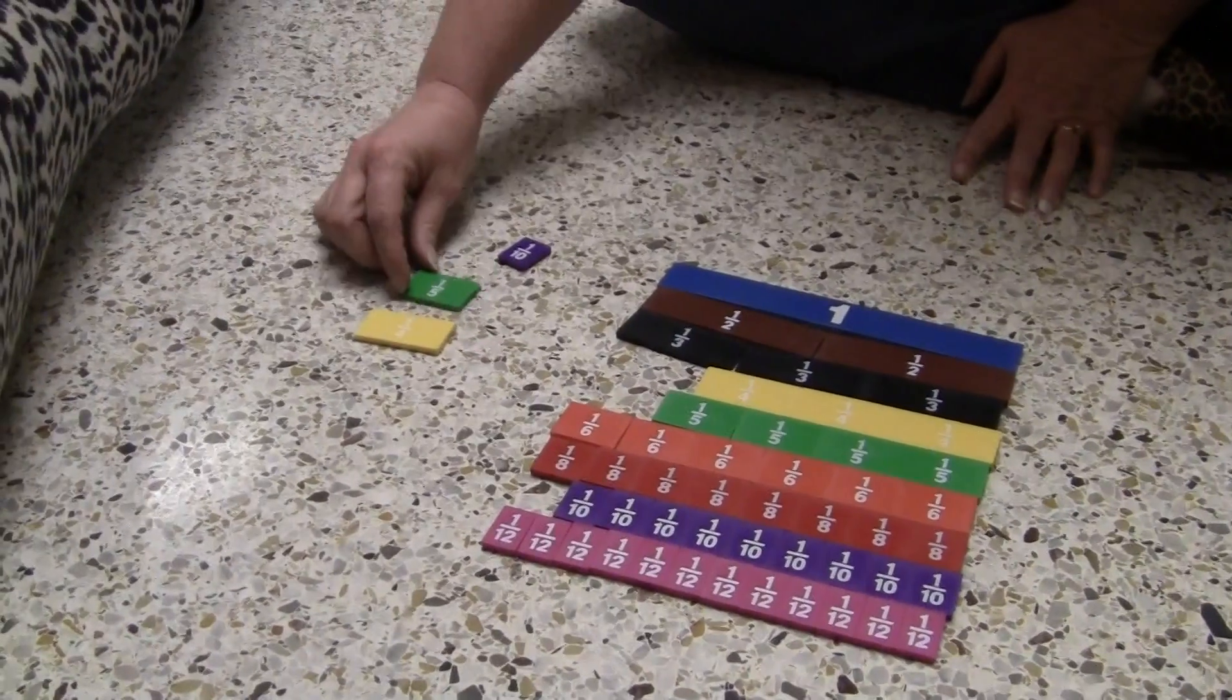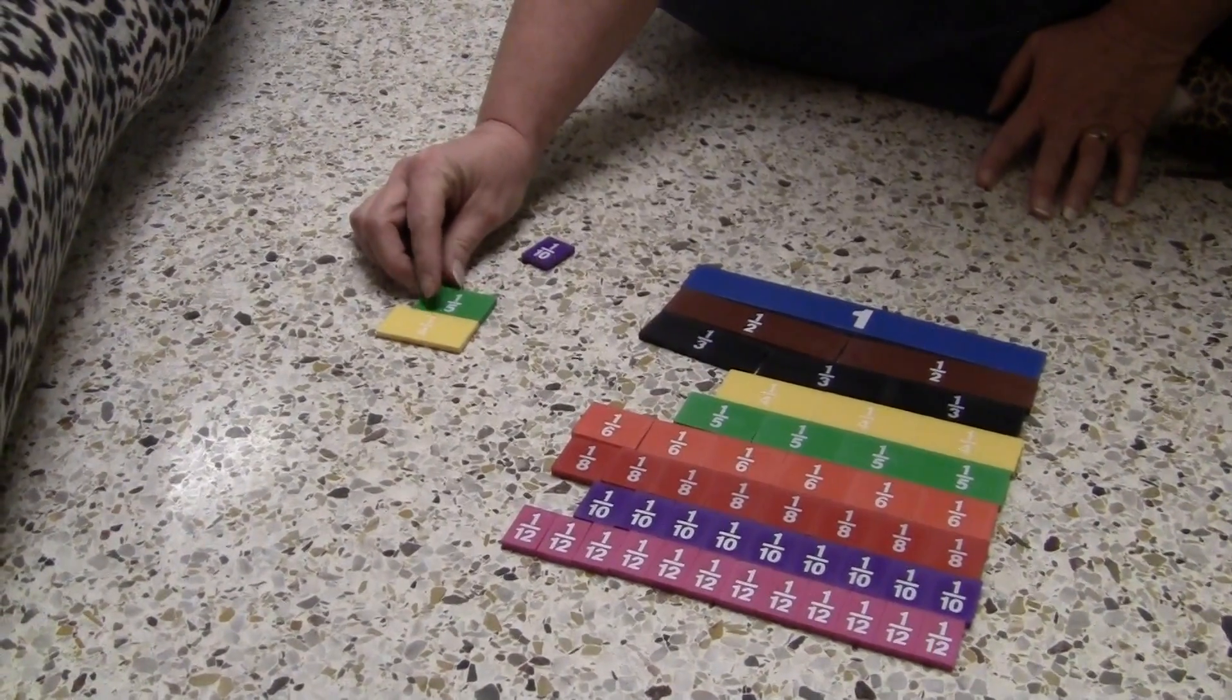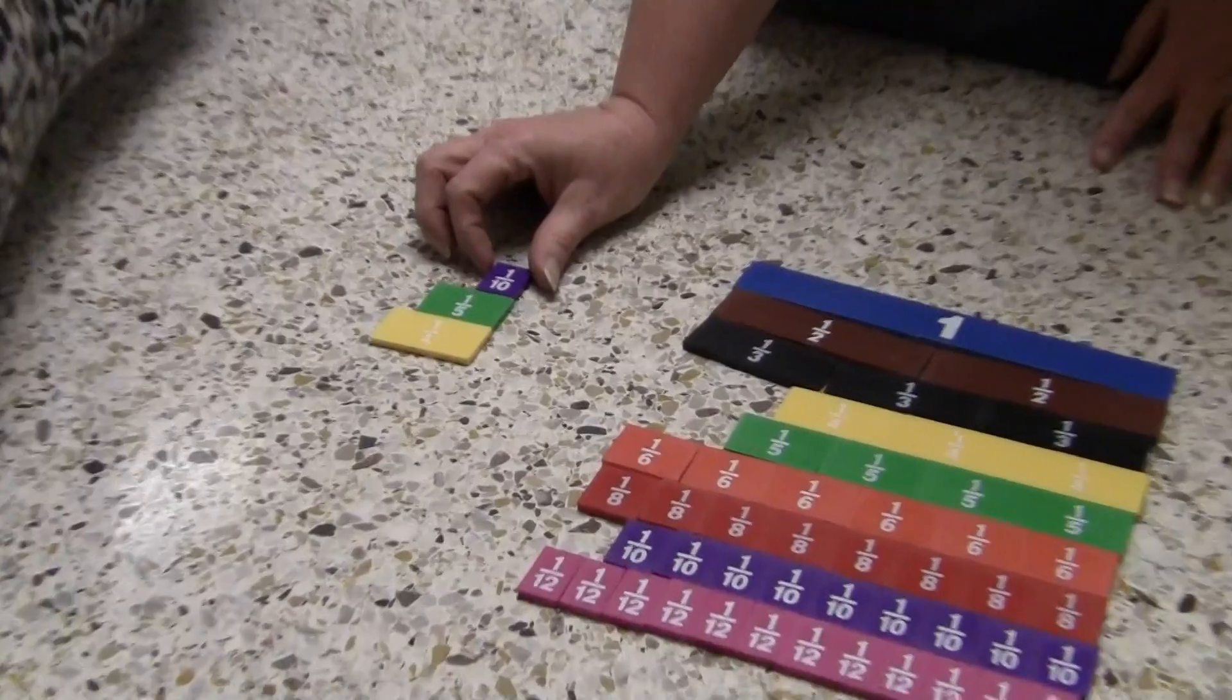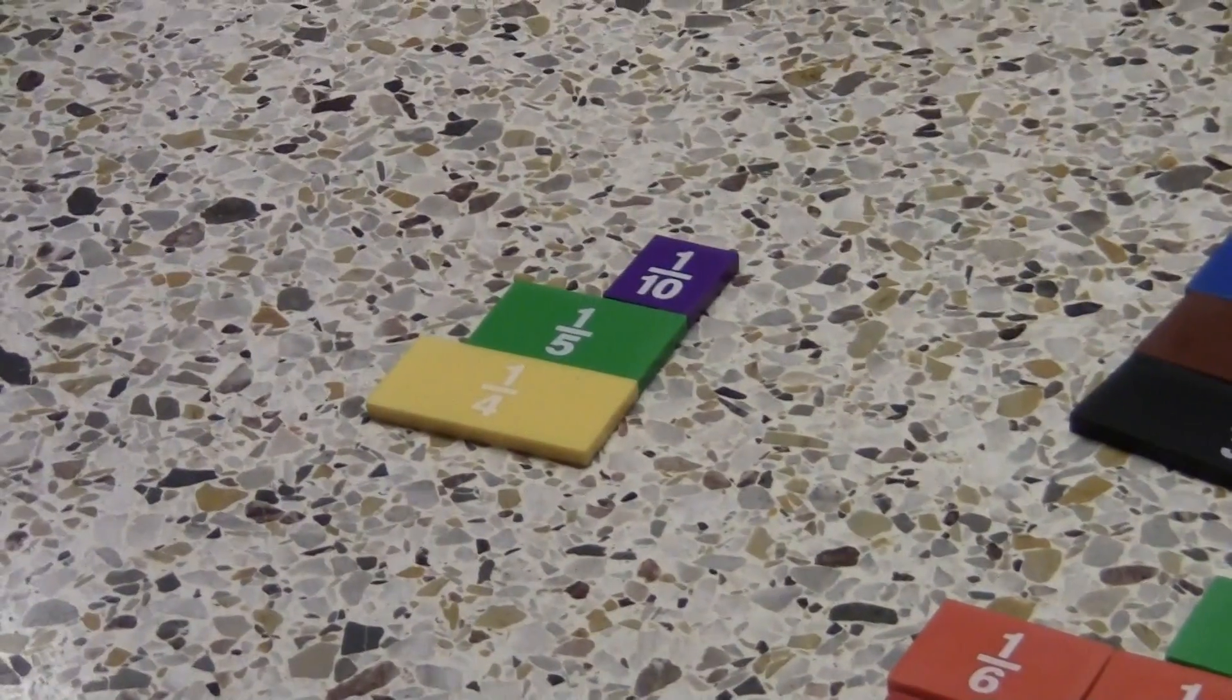By stacking the fractions on top of each other, they can see that one-fourth is bigger than one-fifth and one-fifth is bigger than one-tenth.